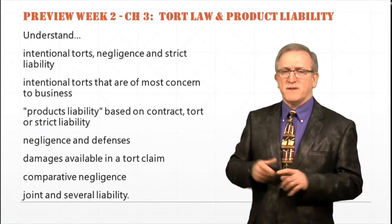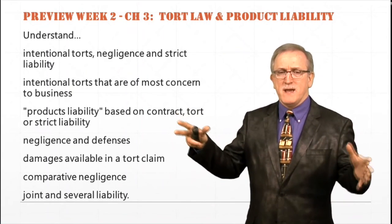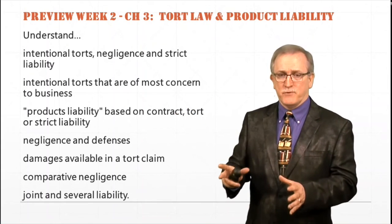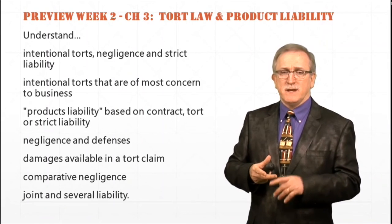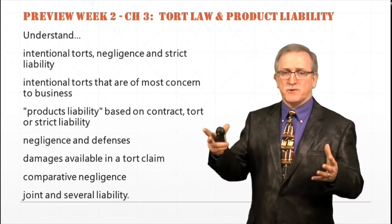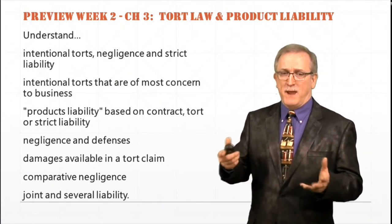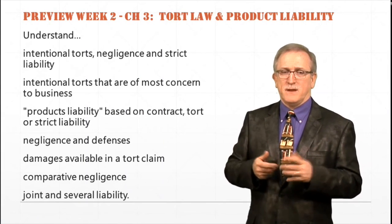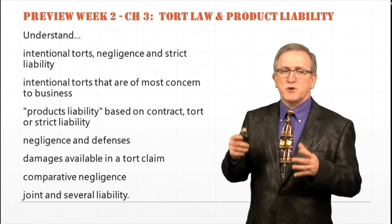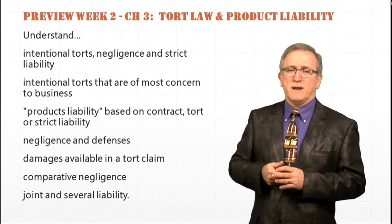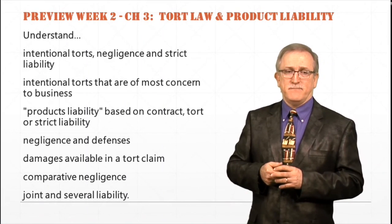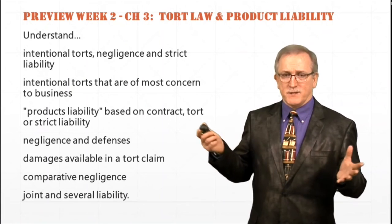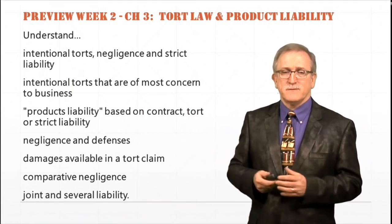Product liability is an umbrella term that includes a number of ways to prove liability. Breach of contract — for example, you go to a restaurant, order chili, and there's a thumb in the chili. Tort claims could be intentional tort or negligence. Then you have strict liability where something is ultra-hazardous, think cigarettes or things like that.